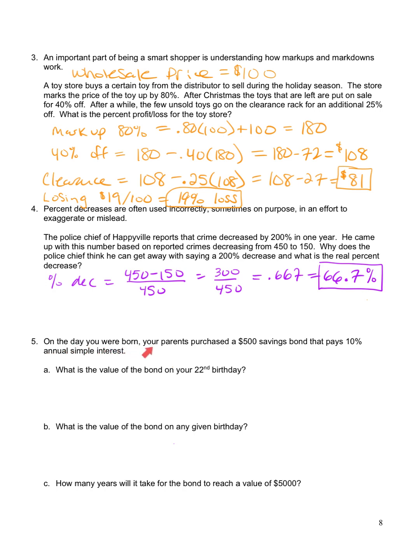Number five. On the day you were born, your parents purchased a $500 savings bond that pays 10% annual simple interest. What is the bond worth on your 22nd birthday? Okay, so this is simple interest. So I'm going to write down the formula. F equals P times 1 plus RT.